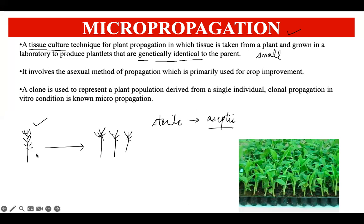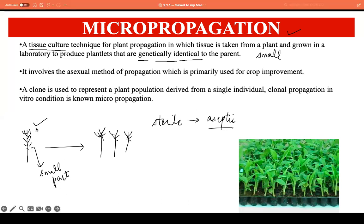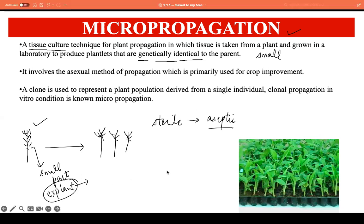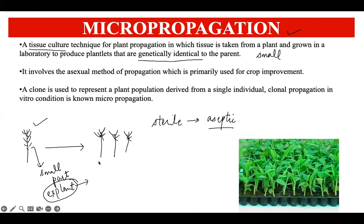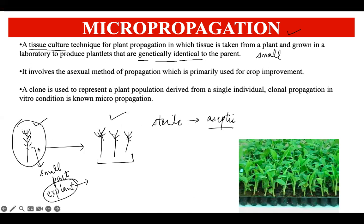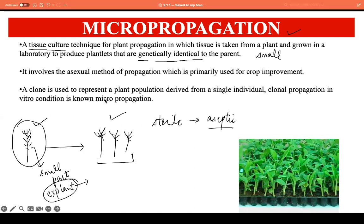What we do in this technique is take a small part of the parent plant. That small part can be anything — it can be the leaf, the node, the shoot, the bud, the root — anything. That small part is referred to as the explant. This explant is then followed through certain procedures of micropropagation, and after a set period of time we obtain a number of plants which have the same genetic identity as the parent plant.